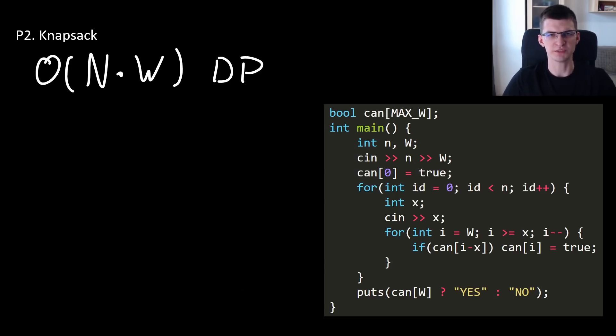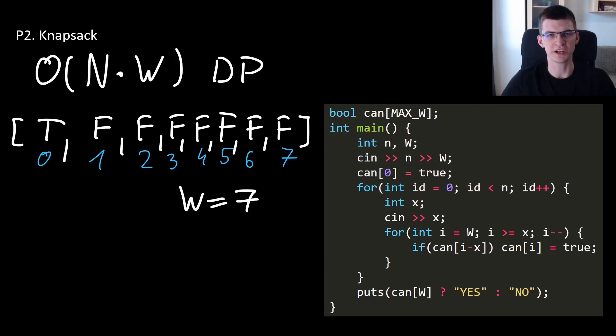In Knapsack there is quite standard N times W dynamic programming approach. We create a boolean array with values true and false. Only the first one is true - first false, false, false, false and so on. The size of this array is W plus 1 and the ith cell, let's say it's called can of i, means if we can get a subset with the sum equal to i. At the beginning only for 0 we have true because we can make an empty subset with sum equal to 0.